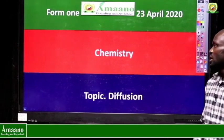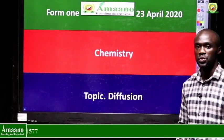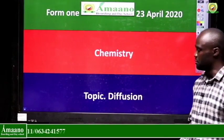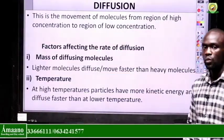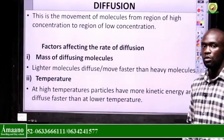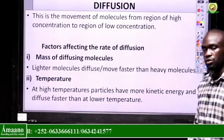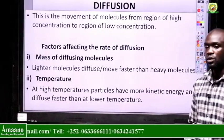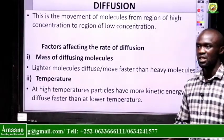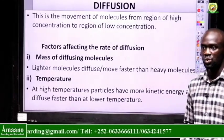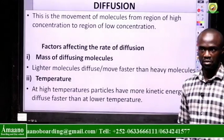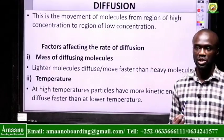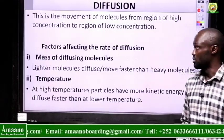Welcome everybody to this tutorial. Today we are going to look at diffusion. Diffusion means the movement of molecules from a region of high concentration to a region of low concentration. For example, you can wear perfume and someone five meters away will be able to smell it. That means the perfume molecules have moved from you, where their concentration is high, to that person, where the concentration is low.